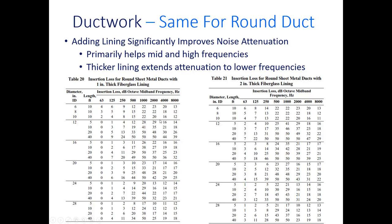The same principles apply to round duct with lining. Going from one-inch to two-inch lining, you can see that absorption is primarily gained at the mid and high frequencies, with less improvement in the low frequencies.